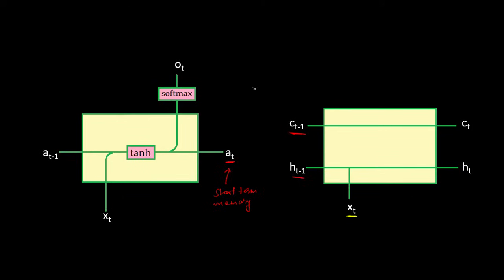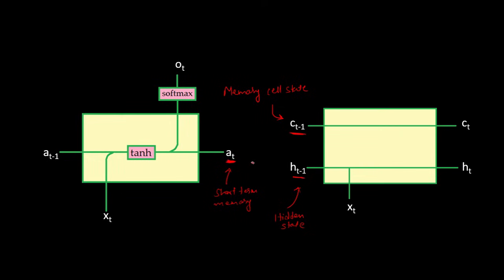In LSTM we have two states instead of just one as in RNN. The first state c is called the memory cell state and the second state is called the hidden state. The memory cell state is responsible for retaining knowledge in memory so that we can use it later, while the hidden state acts like the hidden state in a recurrent neural network. The long-term memory retains context from far back, and the main reason LSTM can do this is because it uses a concept of gates.